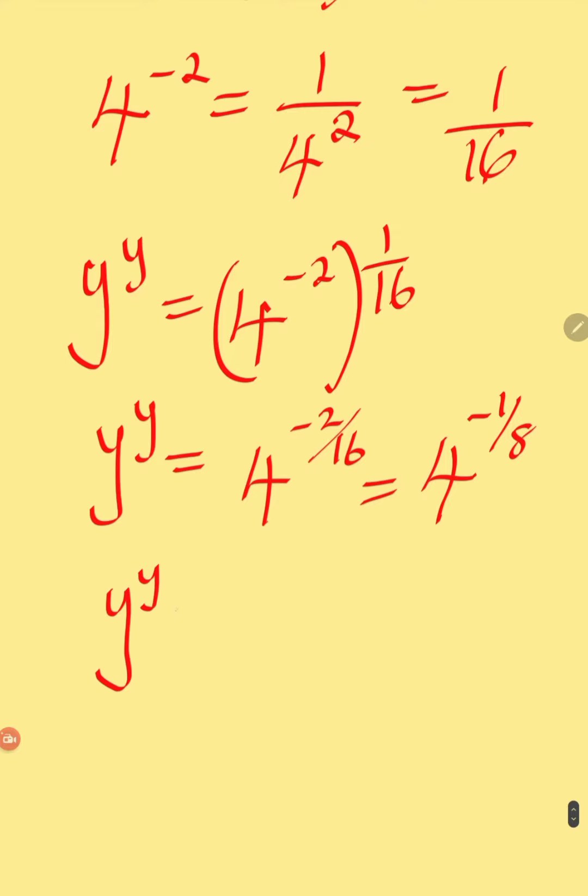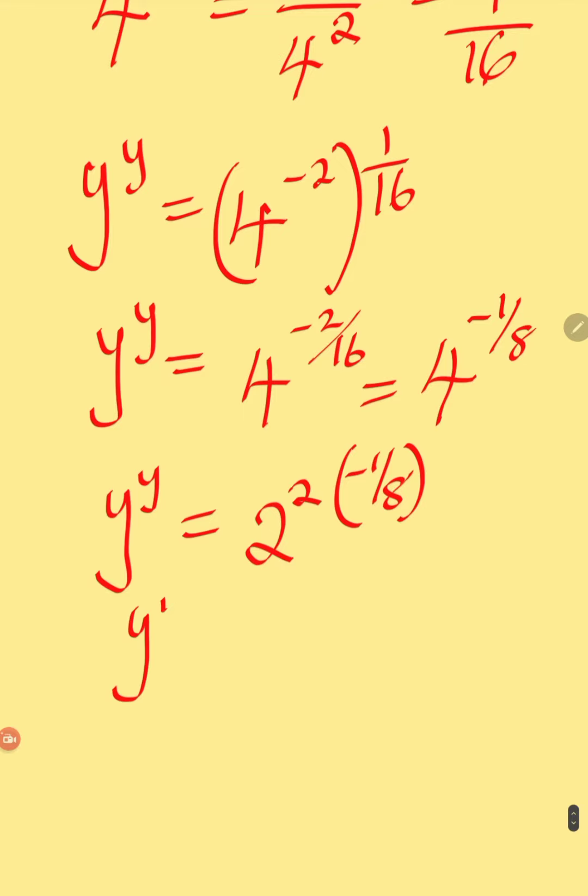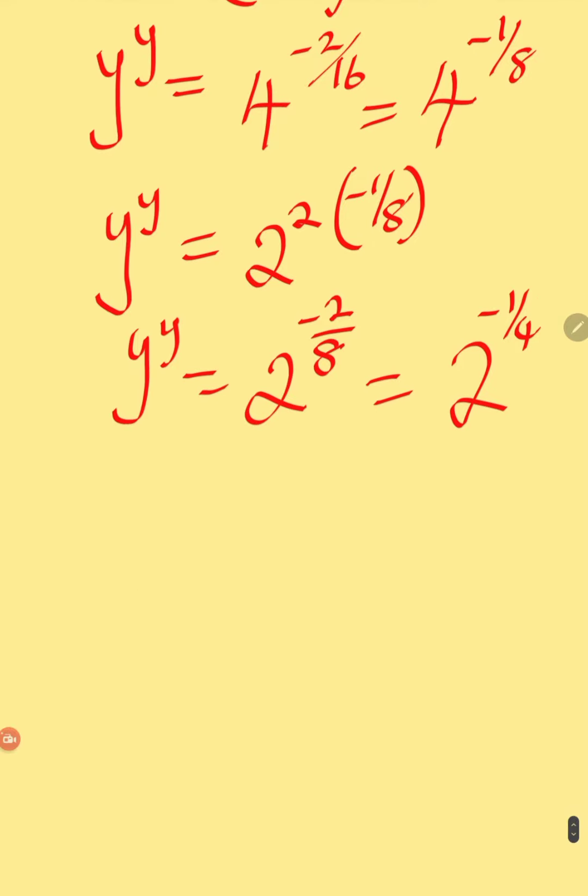If you like, you can still have that y to the power of y is the same thing as 4, which can be written as 2 to the power of 2, then into minus 1 over 8. So that will give us y to the power of y equals 2 to the power of minus 2 over 8, which is equal to 2 to the power of minus 1 over 4. You can stop here if you like.